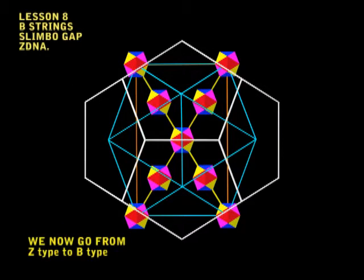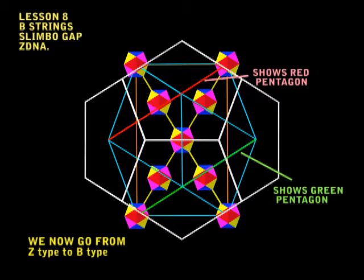So now we'll take this ZDNA geometry and we start going to the B-type DNA geometry. Now in this diagram in front of you I show a red pentagon and a green pentagon. I'm just showing the edges.